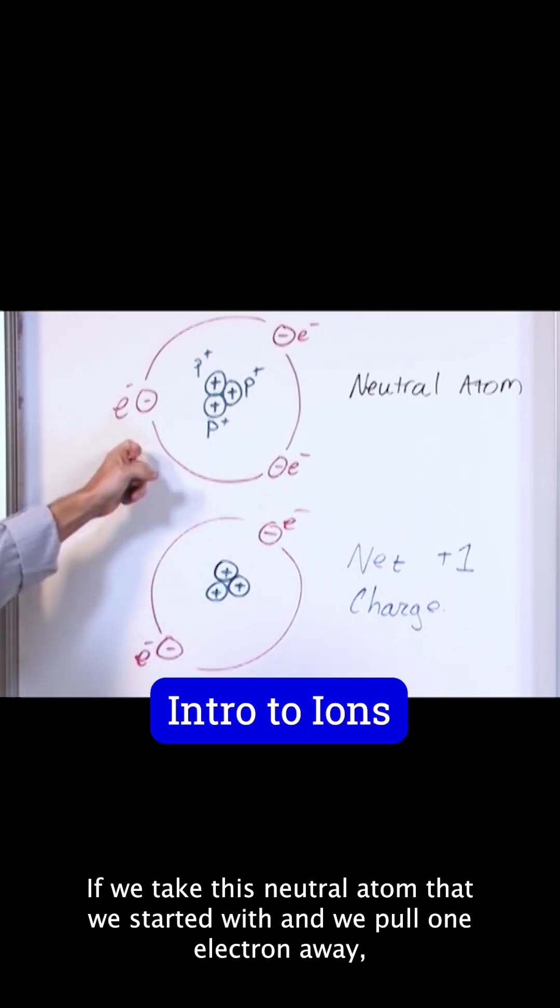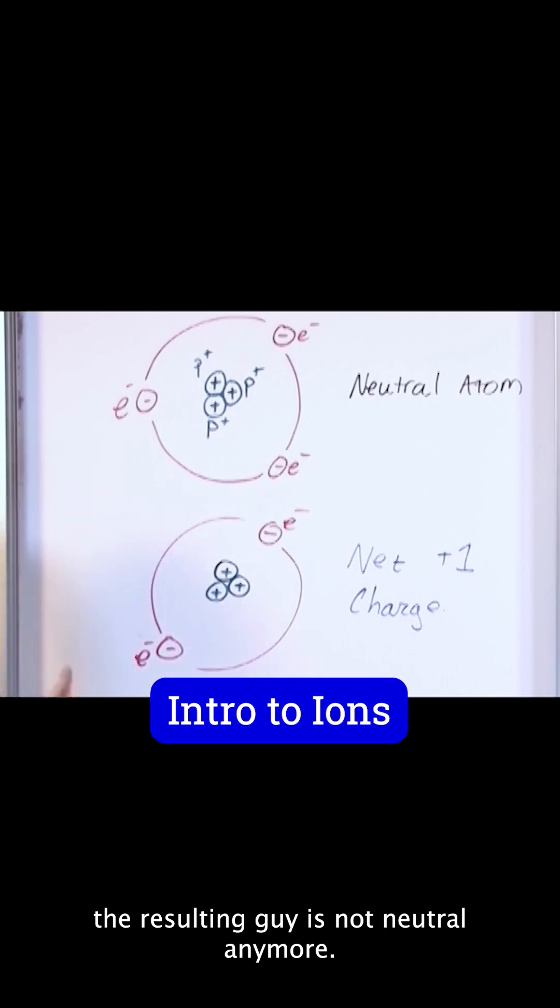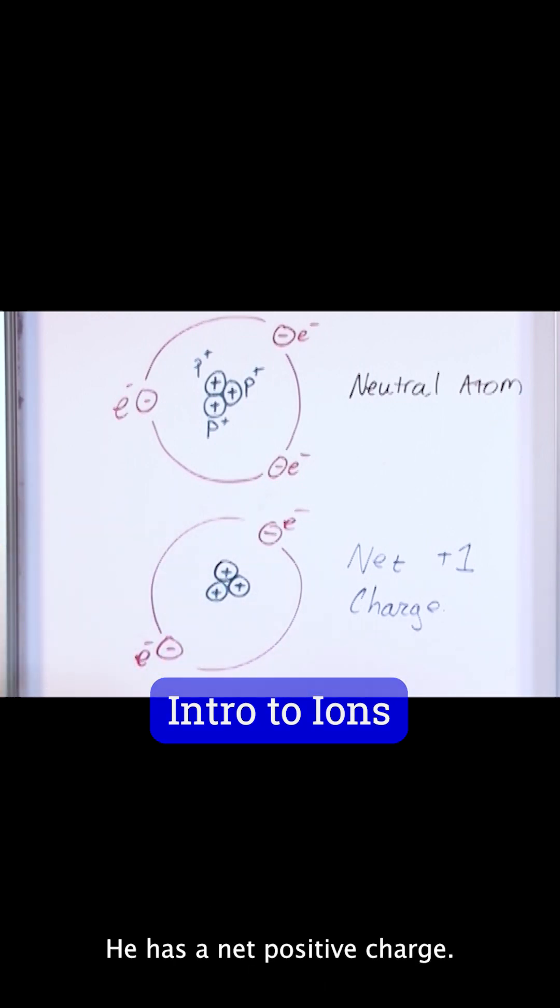If we take this neutral atom that we started with and we pull one electron away, the resulting guy is not neutral anymore. He has a net positive charge.